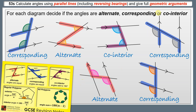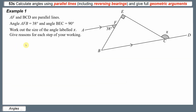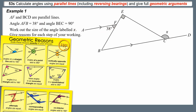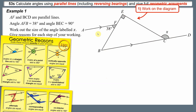Now let's put these reasons to use in geometric arguments. In our first example, AF and BCD are parallel lines, AFB is 38 degrees, and BEC is 90 degrees — all recorded on the diagram. Work out the size of angle X and give reasons for each step. As always with geometric reasoning, we work in two phases: first work on the diagram, then write out the reasons.